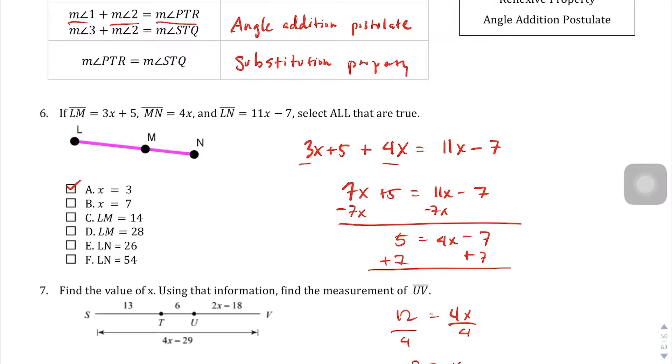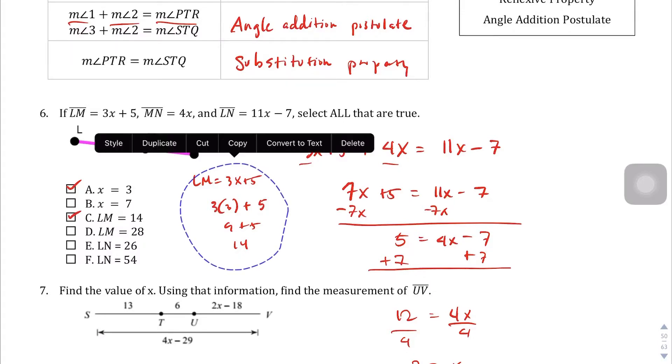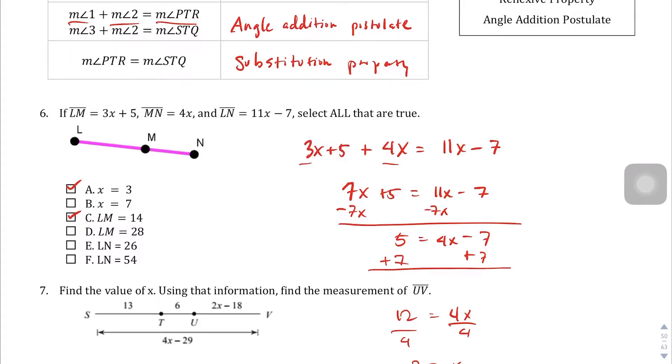LM equals 14. Let's see. If we plug in LM, LM is 3X plus 5. So if we plug in 3, 3 times 3 plus 5, this is 9 plus 5, which is 14. So LM does equal 14. LM does not equal 28. We just established the fact that it's 14. What about LN? LN is 11X minus 7. 11 times 3 minus 7 is 33 minus 7, which is 26. So this is true. The last one is not if that previous one is true. So the first, third, and the fifth choices are your correct choices.